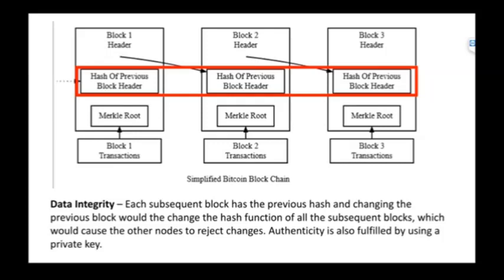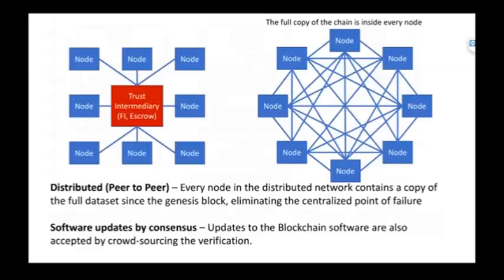We also have security with the private key. With the distributed peer-to-peer system, every node has a full copy of the dataset. It's the genesis block, and this eliminates the central point of failure.